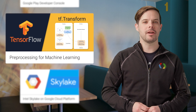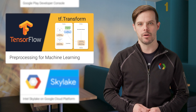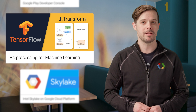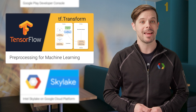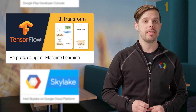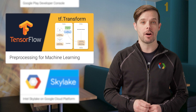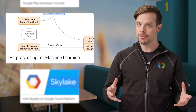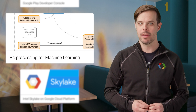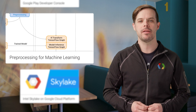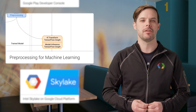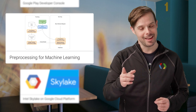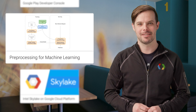TF.transform is a new library for TensorFlow that allows users to define preprocessing pipelines and run these using large-scale data processing frameworks, while also exporting the pipeline in a way that can be run as part of a TensorFlow graph. You'll want the flow chart for this one, and it's on the post.